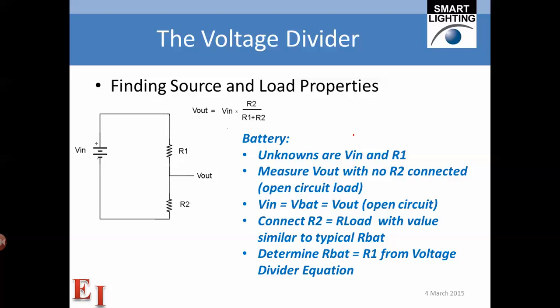So how do we go about finding the source and load properties? If this is the source and here is the resistance of the source, we can add a load R2.